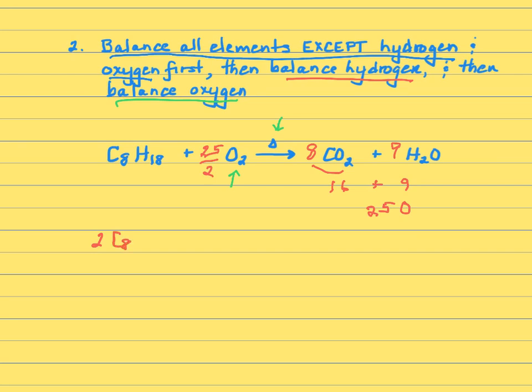So we've got this plus 25 O2 gives you 16 CO2 and 18 H2O. Really, either one is fine. And that's all there is to writing and balancing equations.